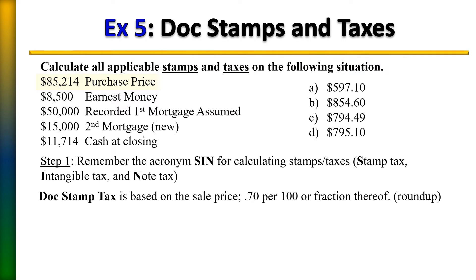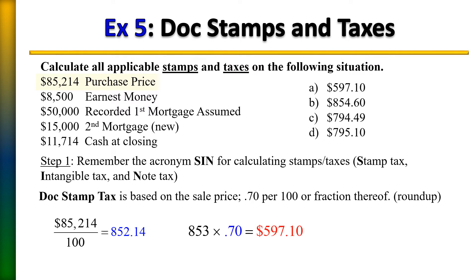First, we're going to take the purchase price and divide it by 100. When we do so we get 852.14. We round that up to the nearest whole dollar, which is 853. Then we multiply that by 70 cents and that gives us a document stamp tax of $597.10.